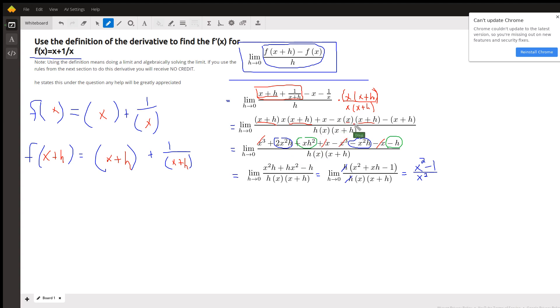Here we're going to distribute minus x squared over the x plus h. So we get minus x cubed minus x squared h. And here finally remove this set of parentheses. Minus x minus h.